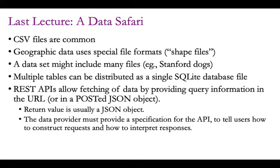Last time we went through what I call the data safari — looking at a lot of different data in the wild. We saw that CSV files are common, but not the only way to get data. We saw some data APIs, and sometimes data was distributed as a SQLite database.